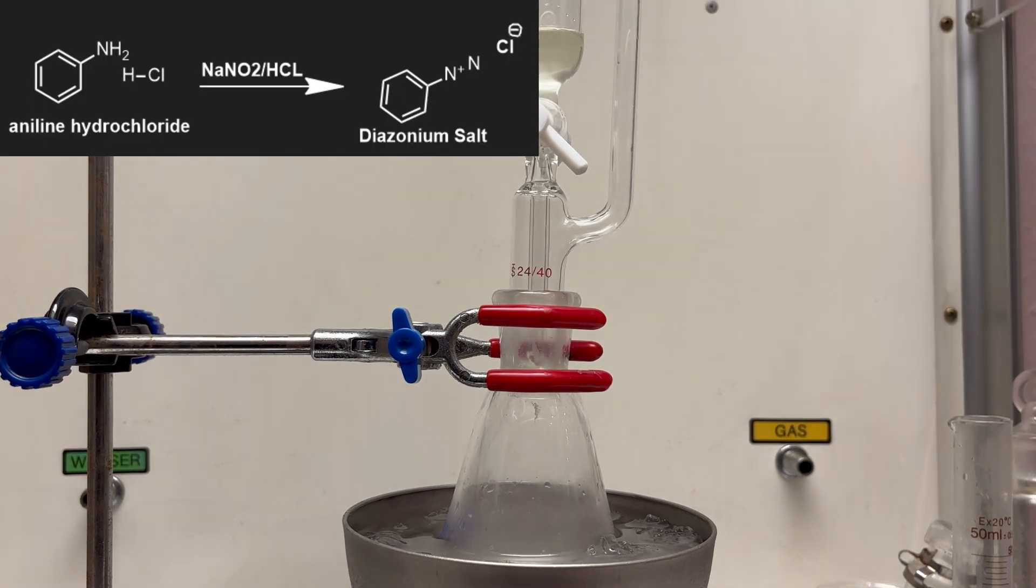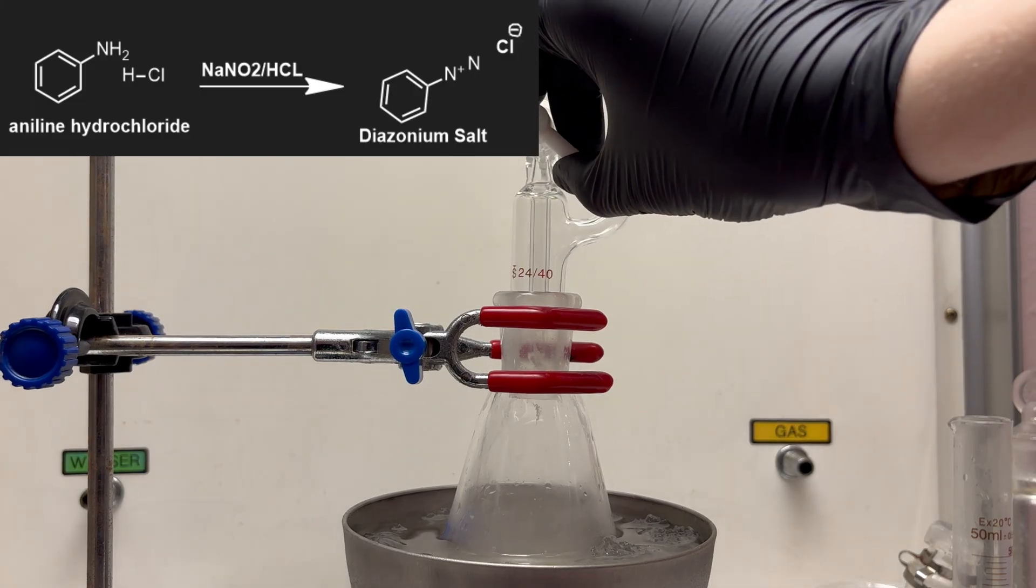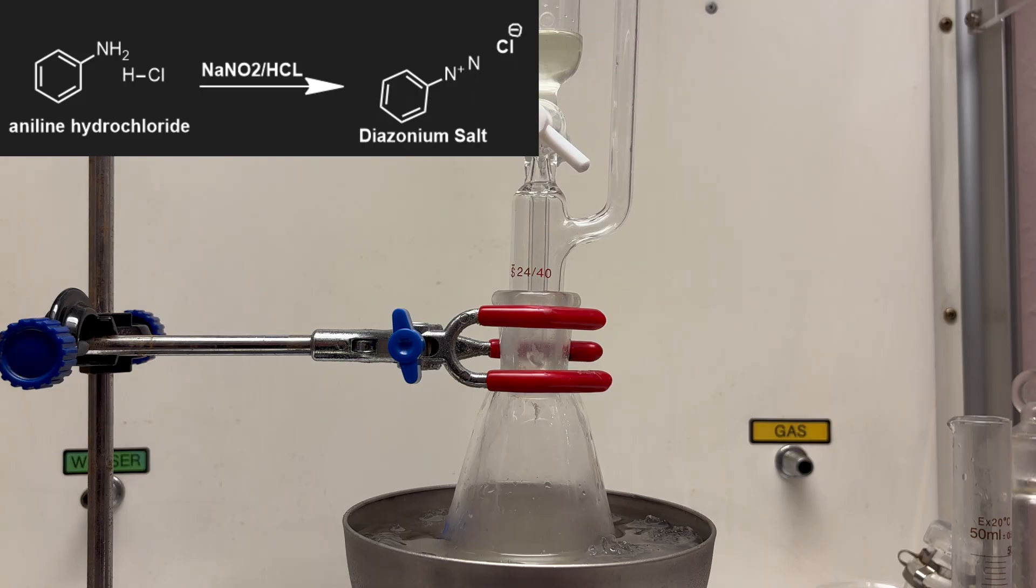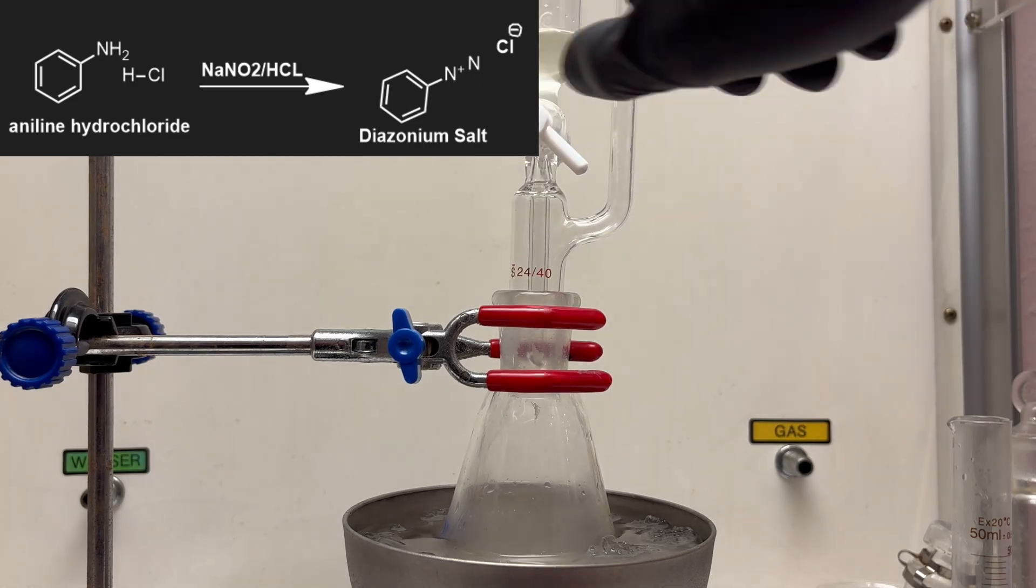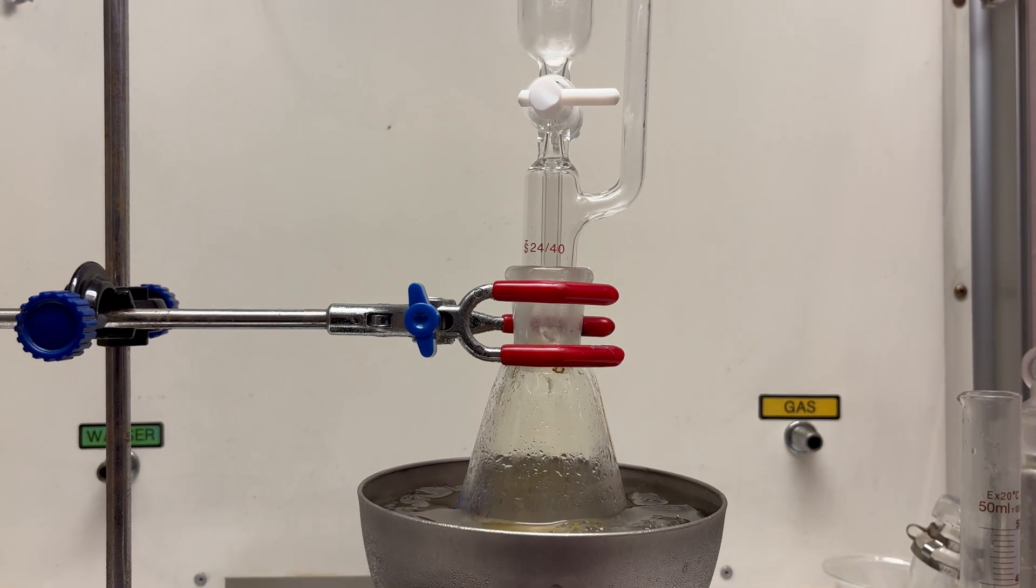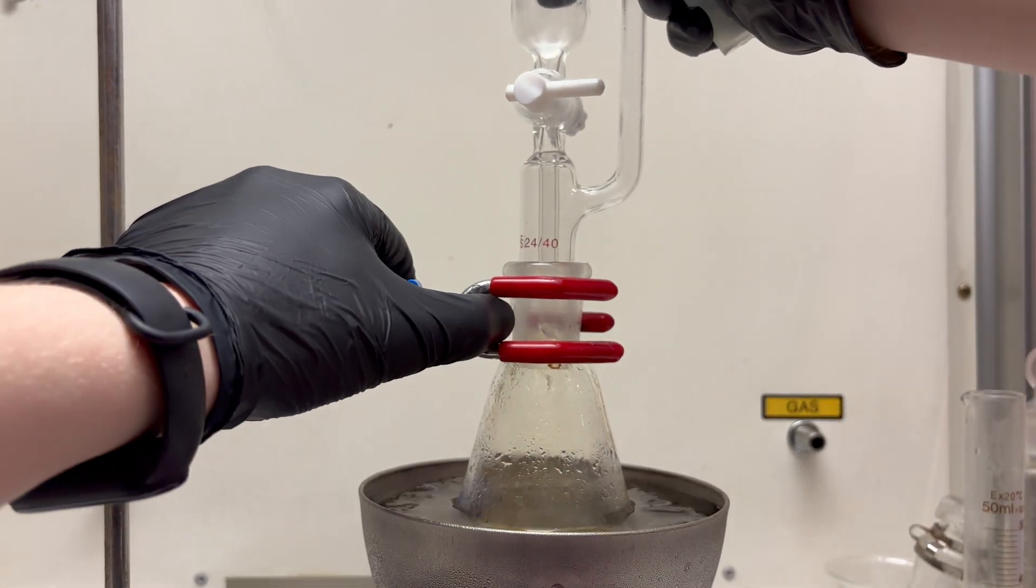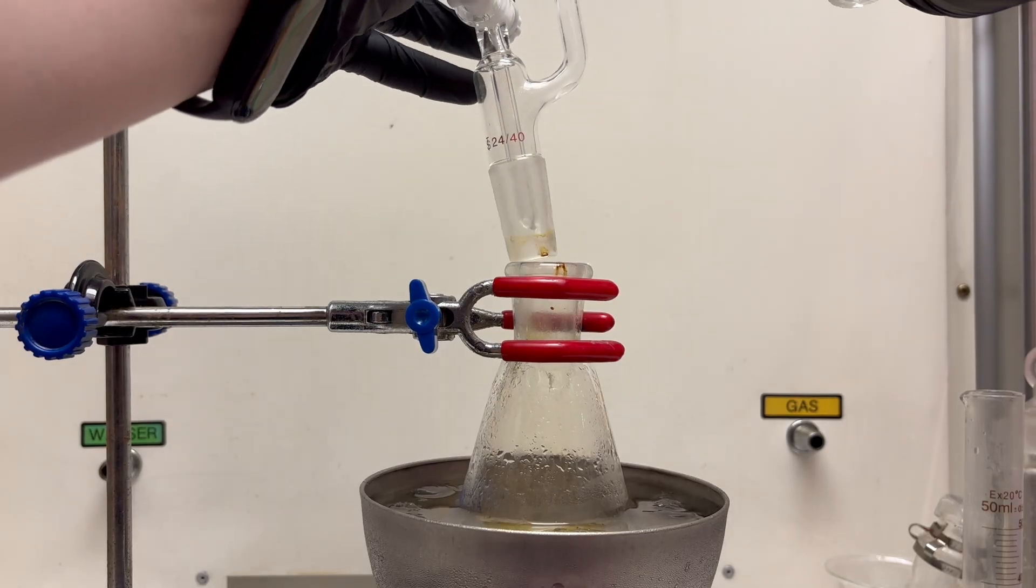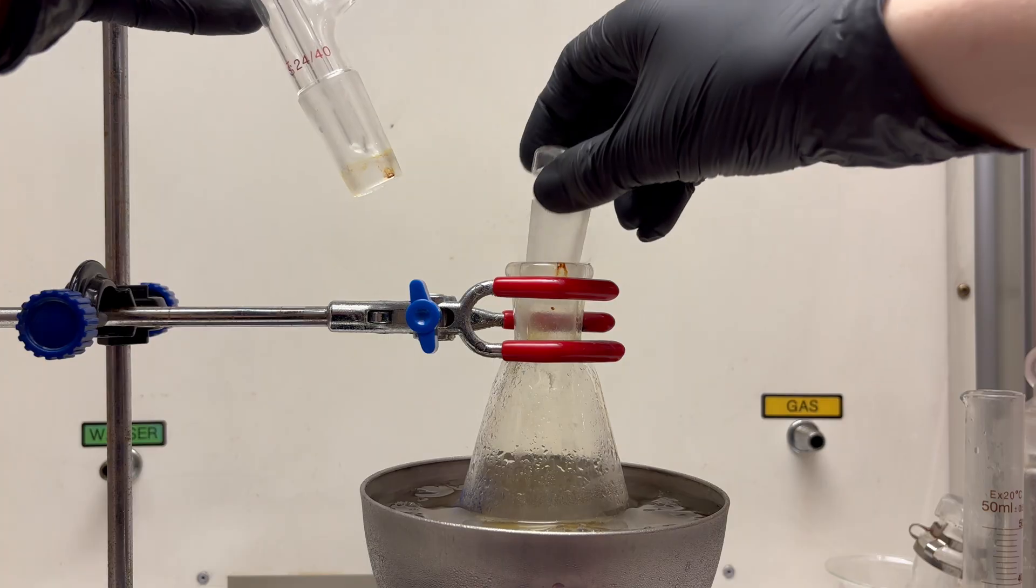When the sodium nitrite solution is added, it reacts with the aniline hydrochloride to produce the diazonium salt of aniline. It's important to keep the reaction between 0 and 5 degrees Celsius because it's very heat sensitive. After the reaction, the addition funnel was removed and the reaction mixture was stirred at 0 degrees for one hour.